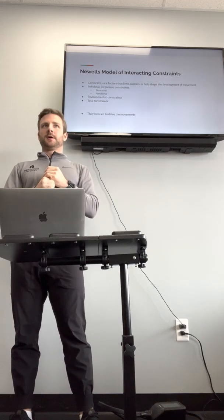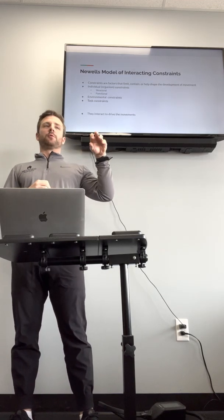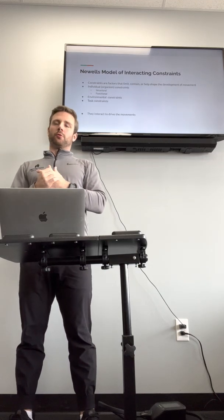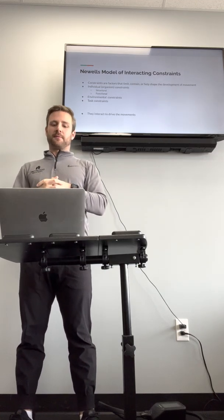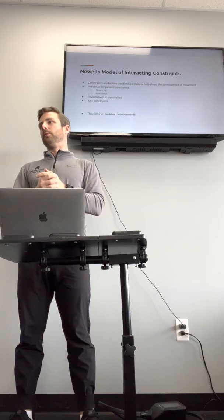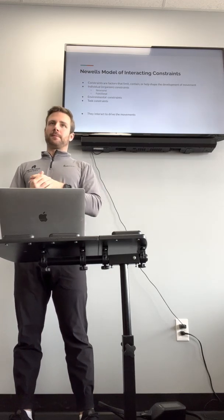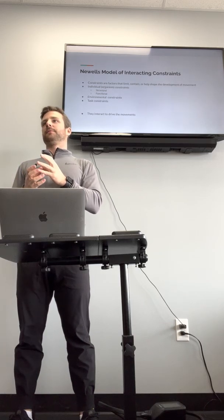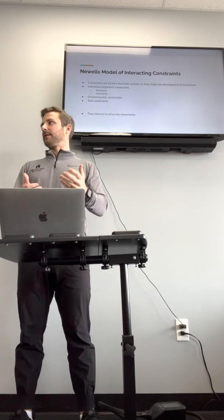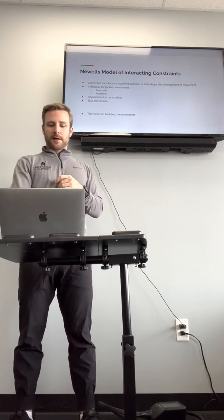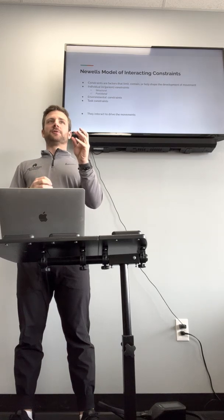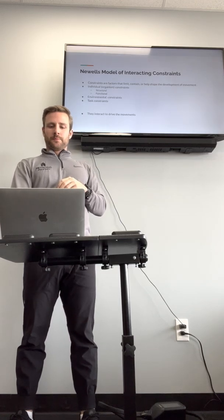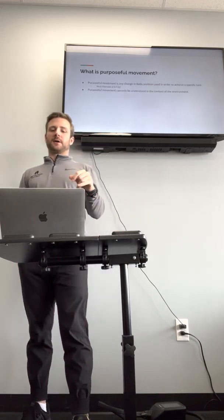This ties into Newell's model of interacting constraints, which goes along with dynamic systems theory and general movement progressions. Constraints are basically: the individual — whatever structural or functional constraints they have, like joint range of motion, mobility, strength, and capacity; the environmental constraints — anything going on around you; and the task constraints — you're trying to achieve a certain task, so if you're kicking a ball that constrains you from throwing a ball. How all these constraints interact begins to drive the actual movement.